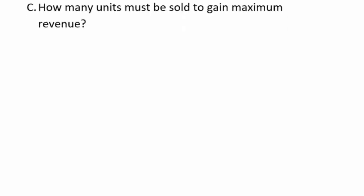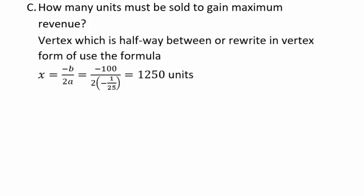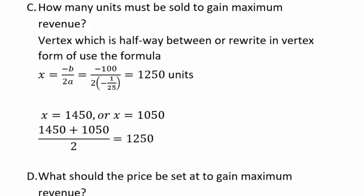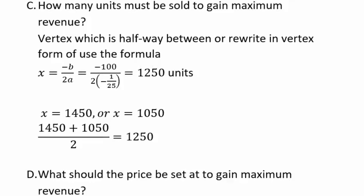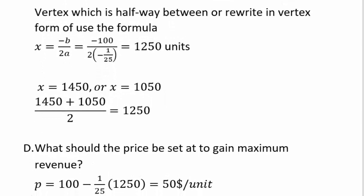To find how many units must be sold to gain maximum revenue, recall it's a downward-facing parabola, so find the vertex. The vertex is halfway between the two x-intercepts, or use the formula negative b over 2a. That gives x equals 1250 units for maximum revenue. To find what price to set, substitute 1250 into the price function, which tells you to set the price at $50 per unit to achieve that maximum revenue.